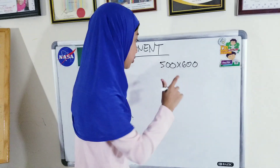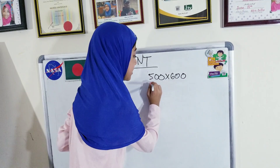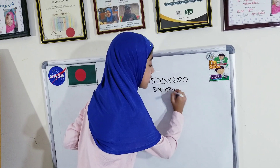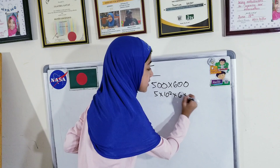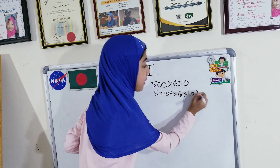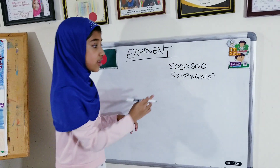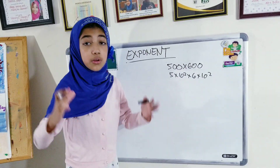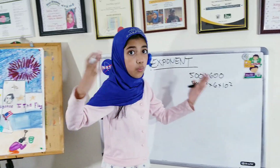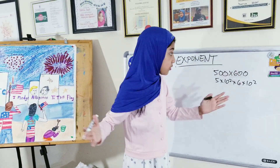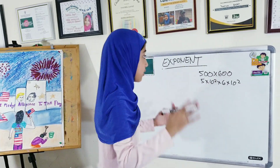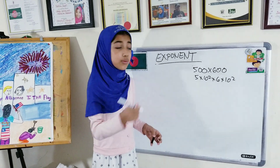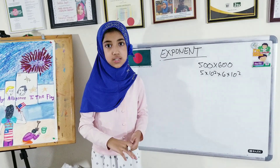In the scientific way and in the good way, we will write 5 times 10 to the power of 2, times 6 times 10 to the power of 2. But in order, after we do that, we will ask ourselves: now what? After we write this equation, what else to do? And to know that, we have to know some rules of the exponent.